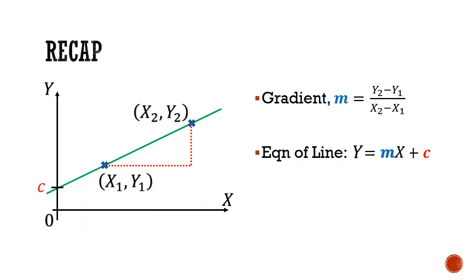Let's do a quick recap. We have learnt in the previous episode how to find the gradient and big Y intercept of a given linear law graph, and transform a linear graph into a non-linear equation by substituting the found gradient and big Y intercept together with the functions for big Y and big X into the equation big Y equals to m big X plus c.